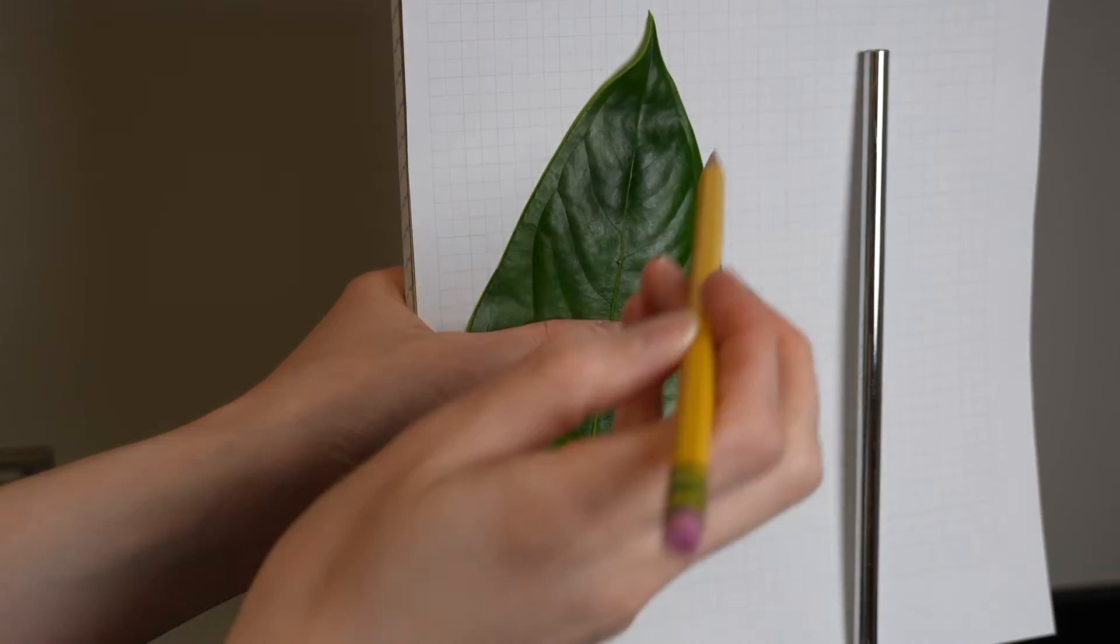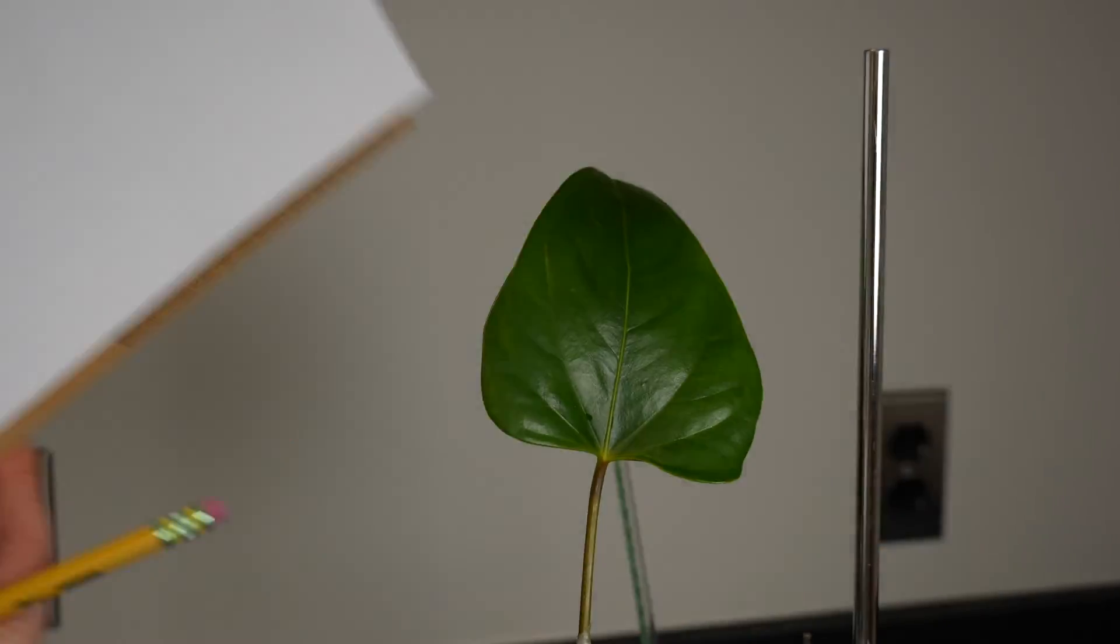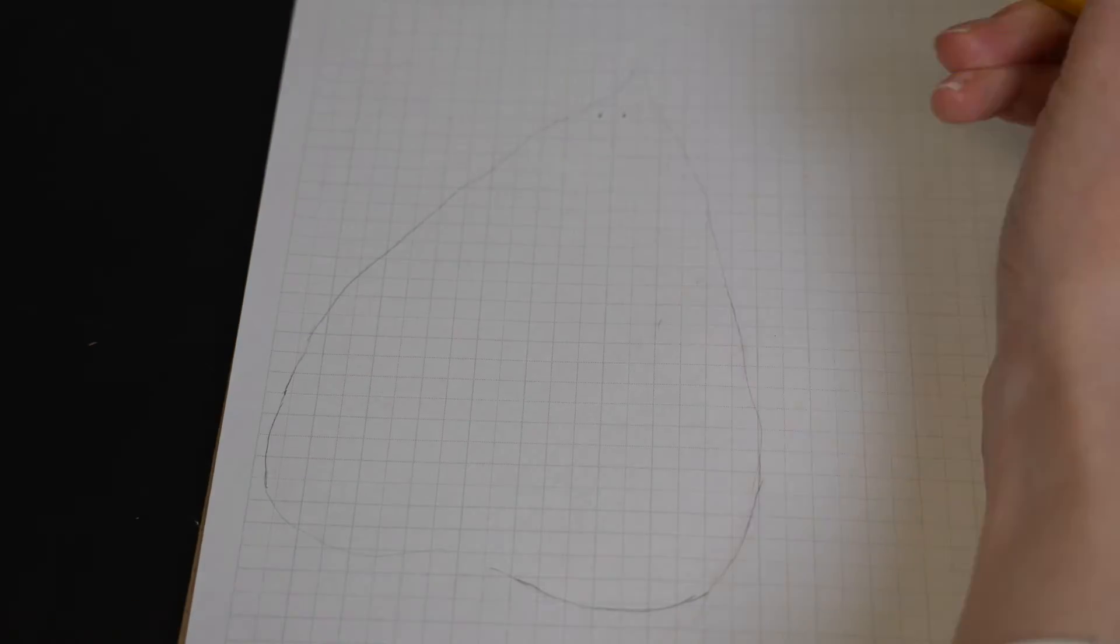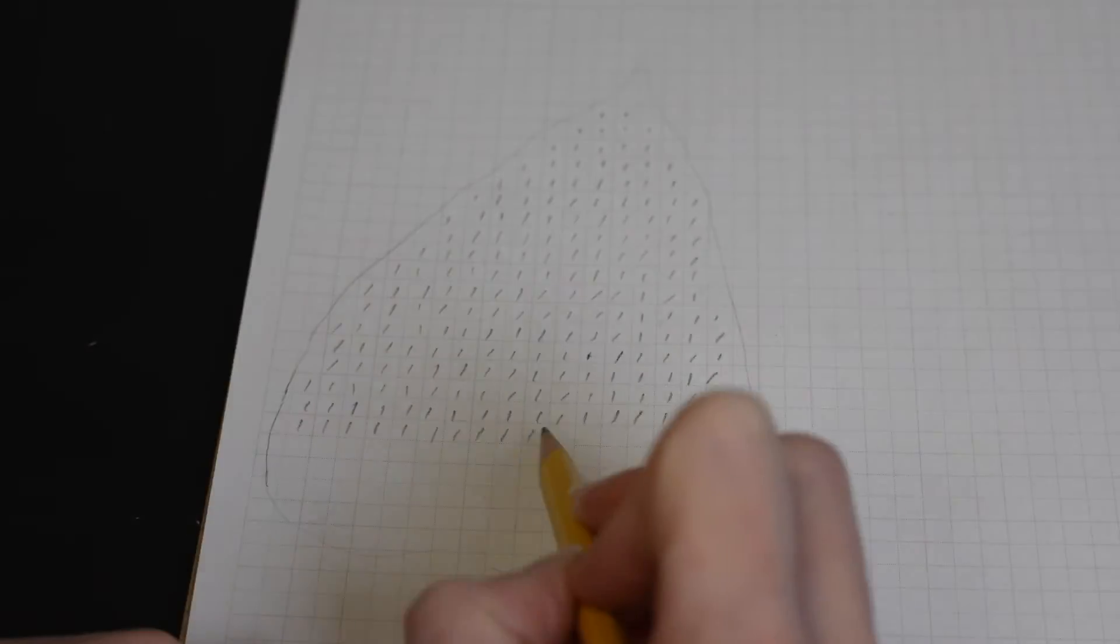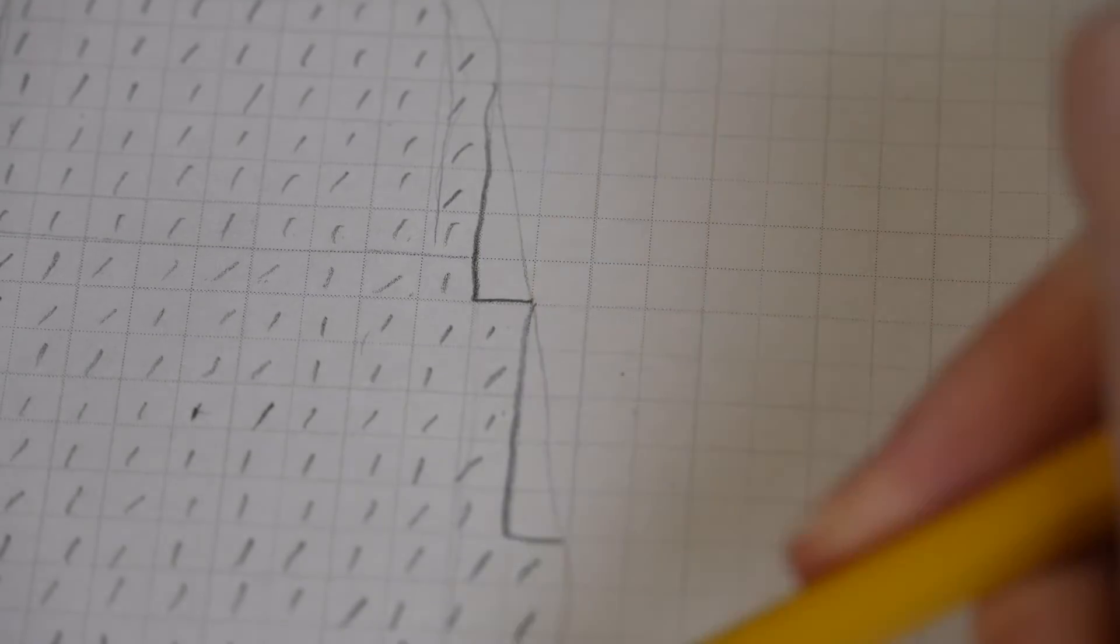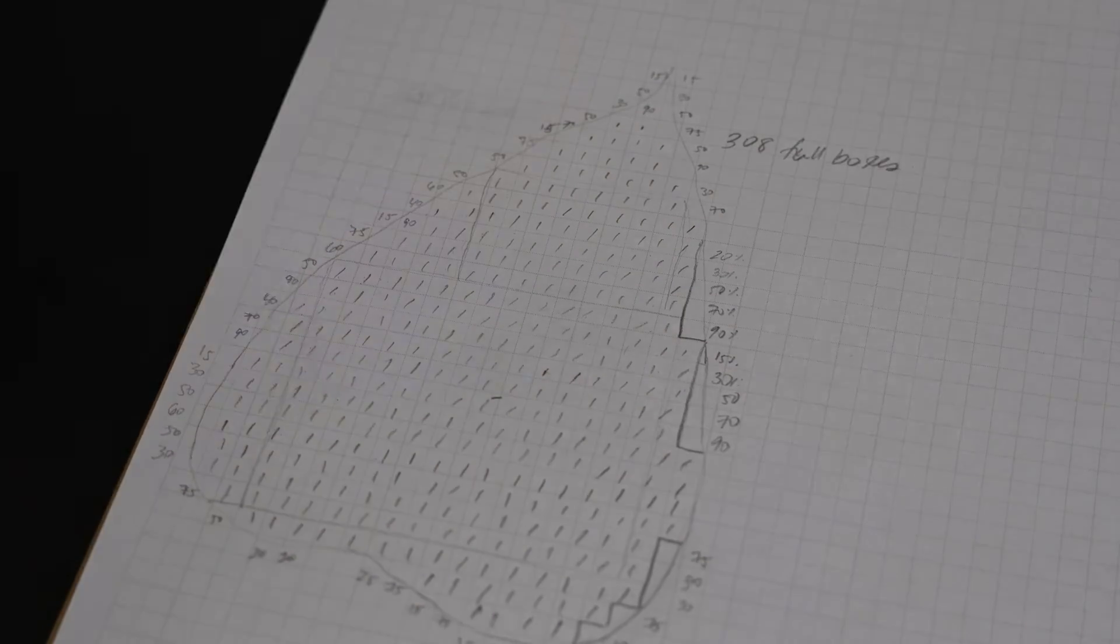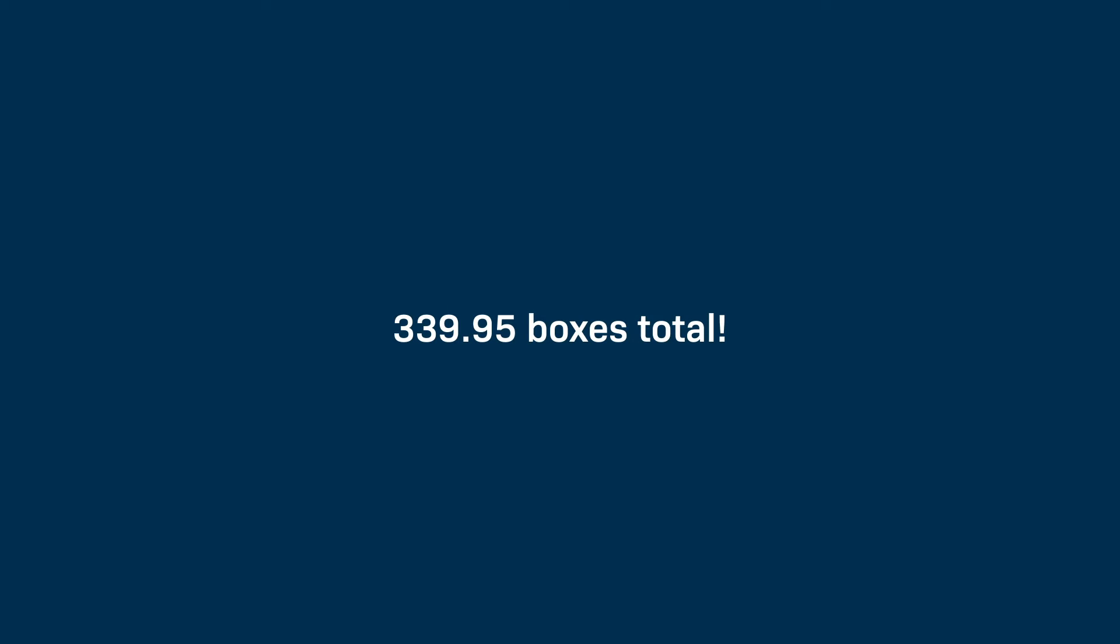We'll be calculating the transpiration rate per square millimeter of leaf surface area, so next we have to estimate the surface area of our leaf. I'll use my pencil to gently trace the outline of my leaf onto graph paper, being careful not to disturb the seal. It's helpful to have the graph paper on a clipboard or notebook to stabilize it. First, I'll count the number of full graph paper boxes in my leaf outline, marking them as I go to keep track. Then I'll look at the boxes that are only partially included in my leaf outline and estimate the percentage of each box that's contained in my leaf. Adding up the whole and partial boxes gets me 339.95 boxes.